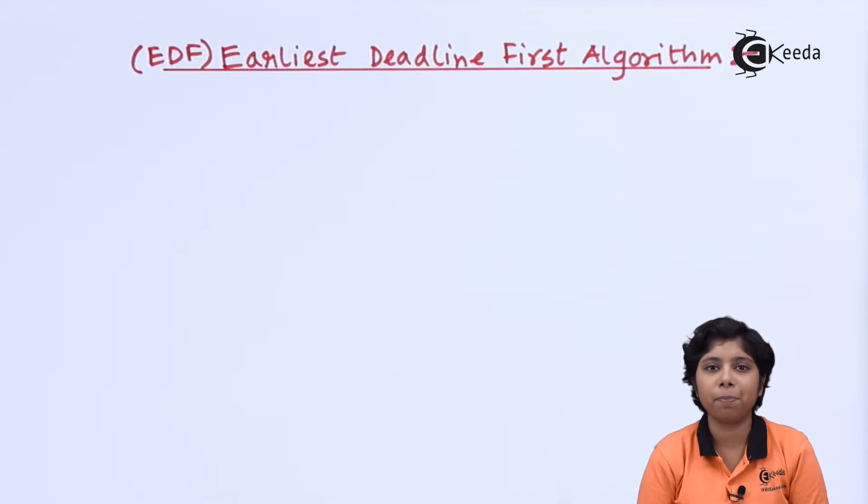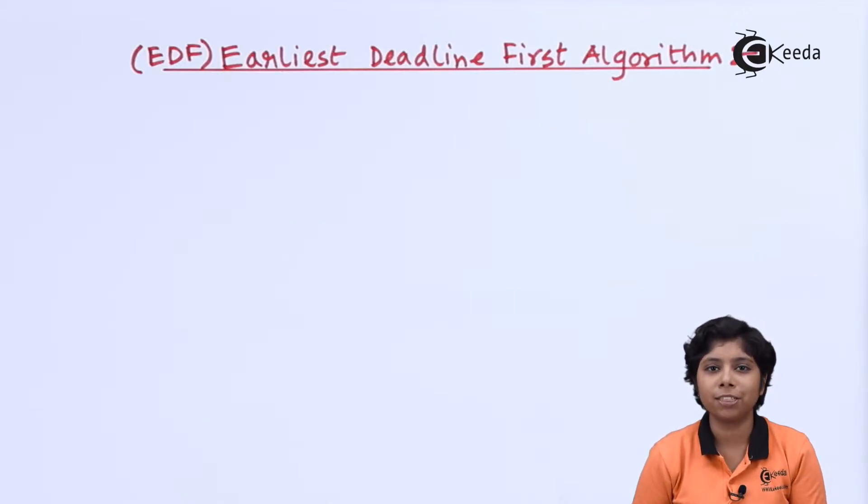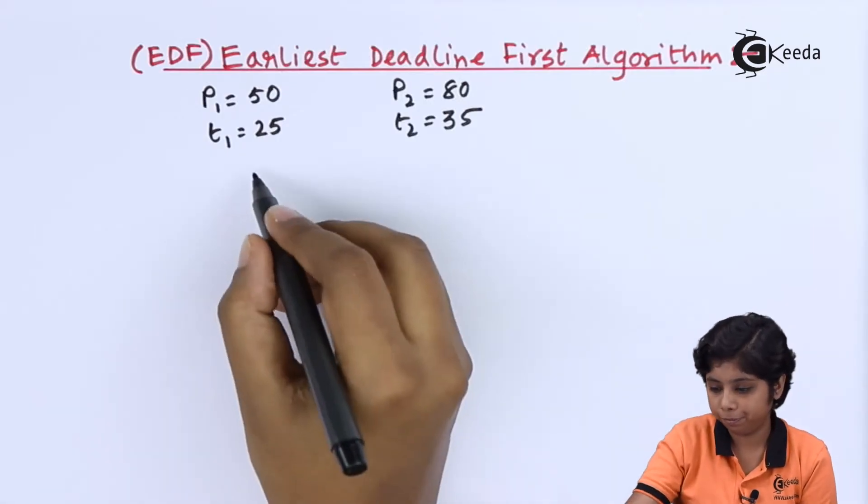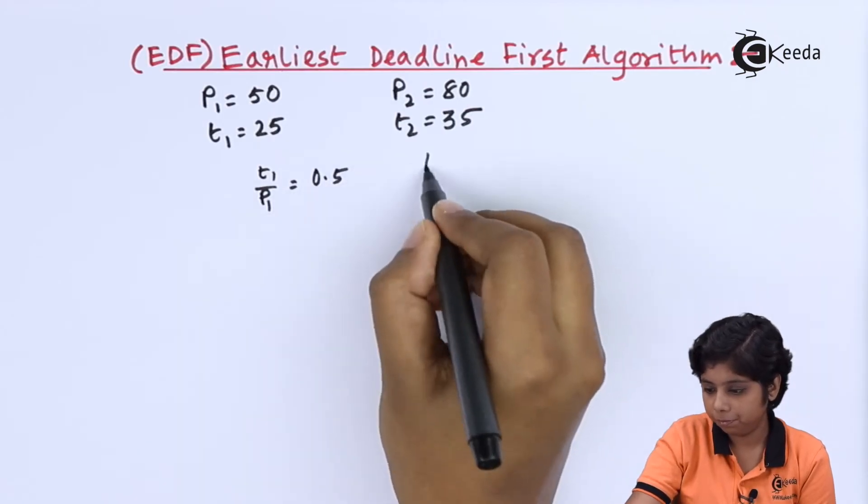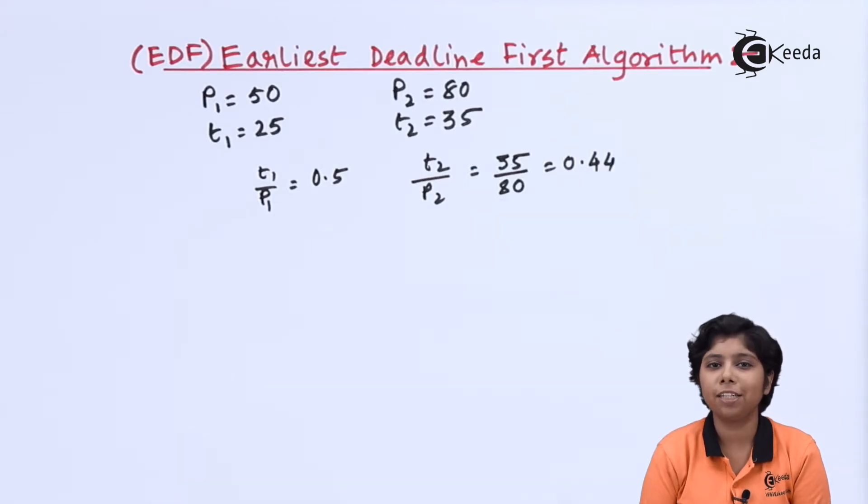Now we will see an example of how EDF will actually run. Let us consider a process which has a period of 50 and a processing time of 25, and a process which has a deadline or period of 80 and a processing time of 35. Calculating the CPU utilization of both combinedly, the CPU utilization is almost 94 percent, leaving 6 percent CPU available for remaining cycles. We can allocate these processes using this EDF algorithm.